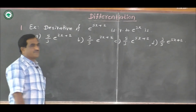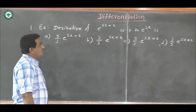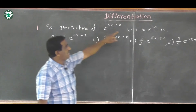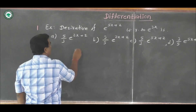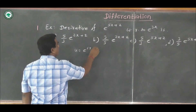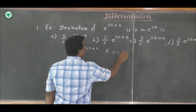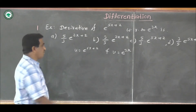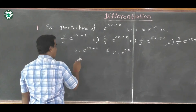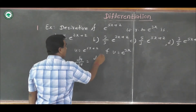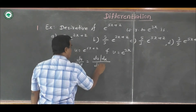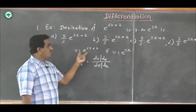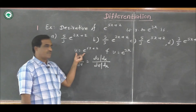We have to find the correct option. We put the first function as U and the second as V: U equal to e raised to (5x plus 2) and V equal to e raised to 3x. This is a simple example. By the parametric rule, we can write du by dv equals (du by dx) upon (dv by dx). We have to find derivatives of these two equations with respect to x.